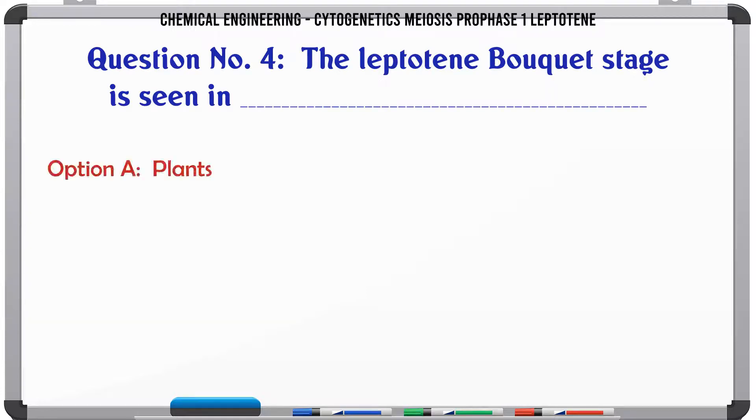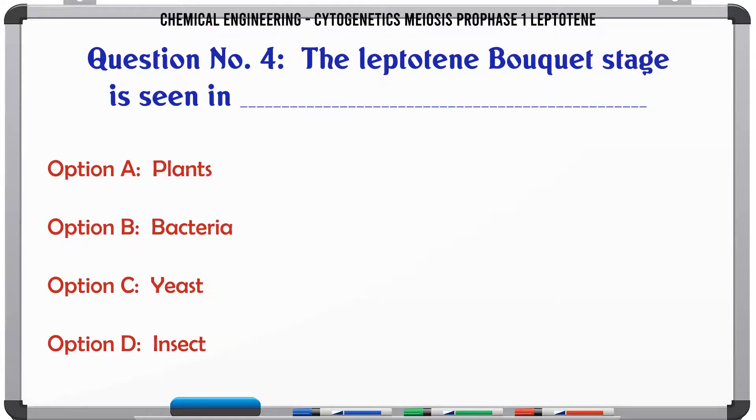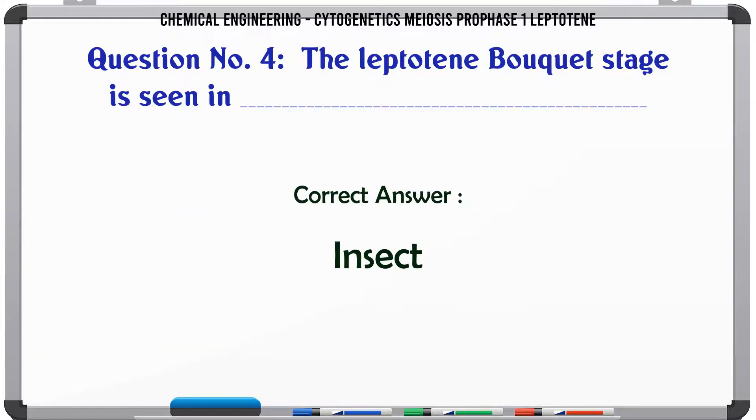The leptotene bouquet stage is seen in: A. Plants. B. Bacteria. C. Yeast. D. Insect. The correct answer is: Insect.